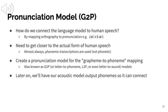Now let's talk about pronunciation models. We have a language model in orthography — the standard spelling of the language. But human speech uses phonemes and sounds, not spelling rules. So we need to connect the language model to human speech by mapping orthography to pronunciation in phonemic transcription. We do this using a pronunciation model, usually called a G2P model — grapheme-to-phoneme model. You might also hear 'letter to phoneme' or 'letter to sound', but it's all the same concept: take a word and output its pronunciation in the International Phonetic Alphabet or another phonemic transcription system.